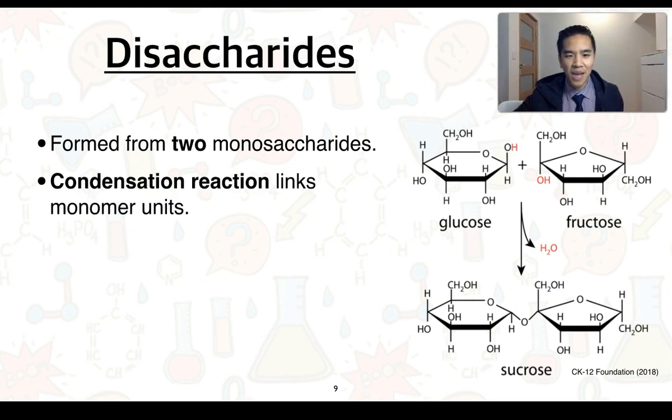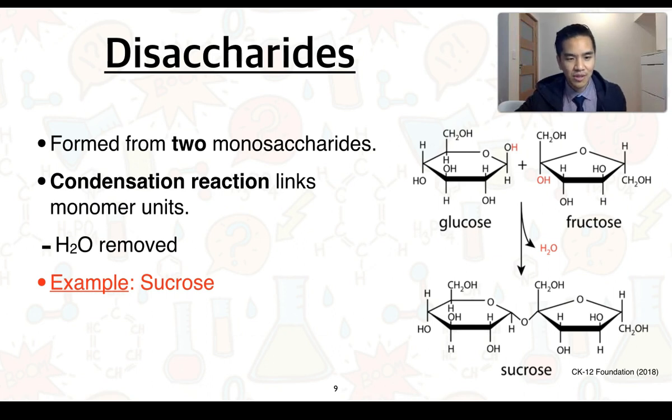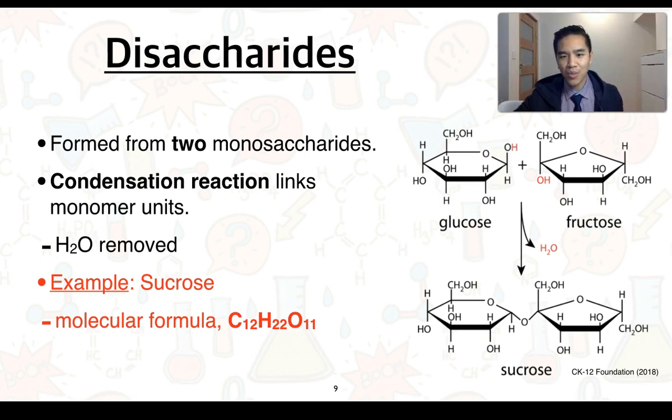To summarize, condensation reactions help link the monomer units together. We get the removal of water. And we've got an example here which is of sucrose. If we consider that water's been removed, then we can determine that its molecular formula should be C12H22O11. And again, it's probably worthwhile that you go and check that based on the structural formula of sucrose.